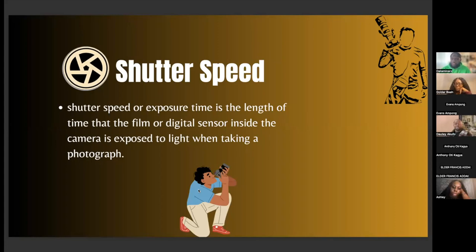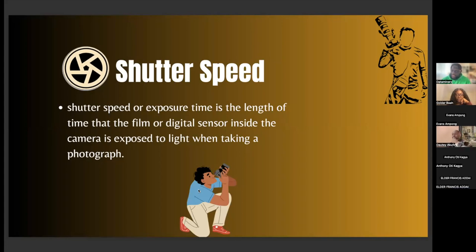For video shutter speed, most of the time you're doing 1/48, 1/50. For slow motion, you might be shooting at 1/125 or 1/250, depending on what frame rate you set for video.